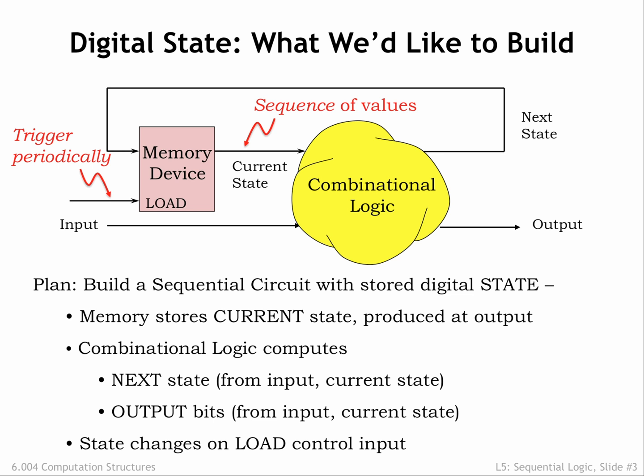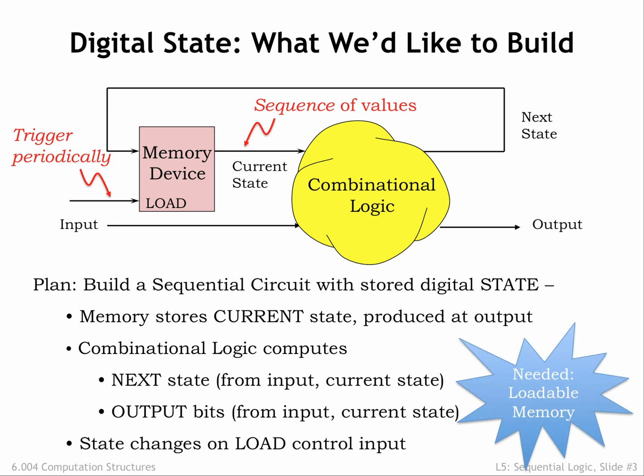The memory component has a specific capacity measured in bits. If the memory component stores k bits, that puts an upper bound of 2 to the k on the number of possible states, since the state of the device is encoded using the k bits of memory. We'll need to figure out how to build a memory component that can be loaded with new values now and then — that's the subject of this chapter. We'll also need a systematic way of designing sequential logic to achieve the desired sequence of actions — that's the subject of the next chapter.